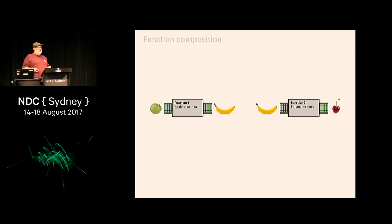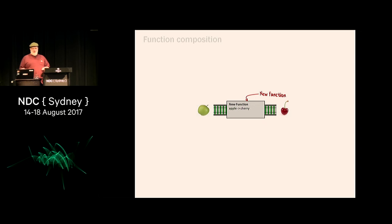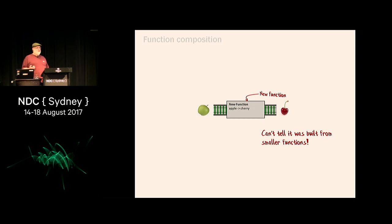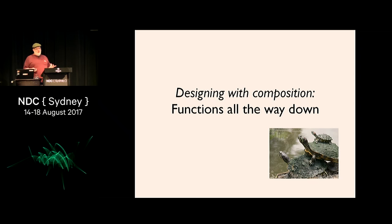Composition everywhere. Here we have two functions: one is apple-to-banana, another is banana-to-cherry. I want to glue them together. I take the output of one and glue it into the input of the other, and what we have now is a new apple-to-cherry function. But there's a couple of cool things: you can't tell this new function was built from small functions. And the banana disappeared! The low-level code cares about bananas, but when you've built up high-level code, the bananas have disappeared and all you care about is apples and cherries.